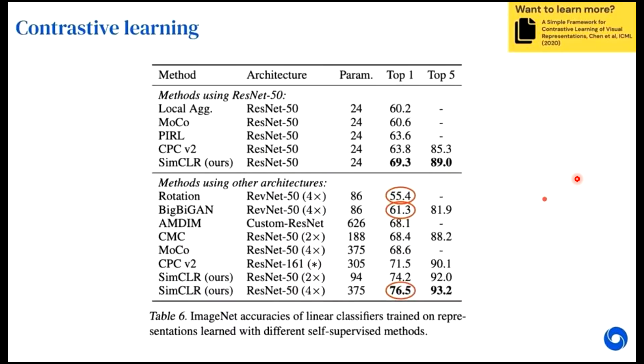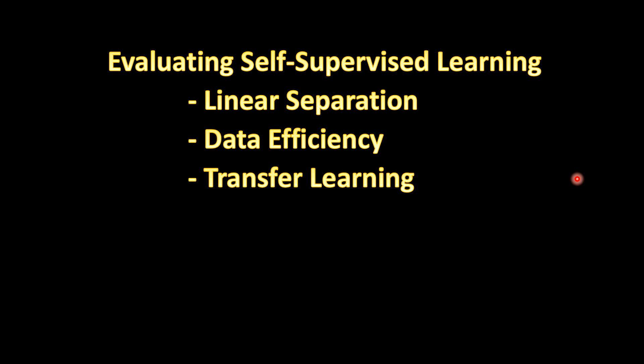So I think pretty much that's all I wanted to discuss. So if you have your self-supervised learning model, you can evaluate them under these three scenarios of linear separation, data efficiency, or transfer learning. So yeah, that's all from here. Till then, keep learning and keep exploring neurons. Bye.